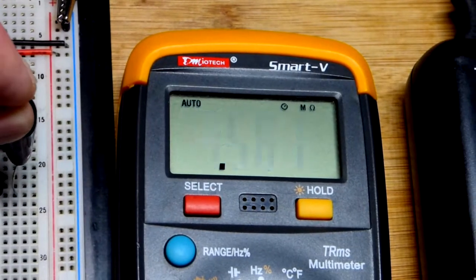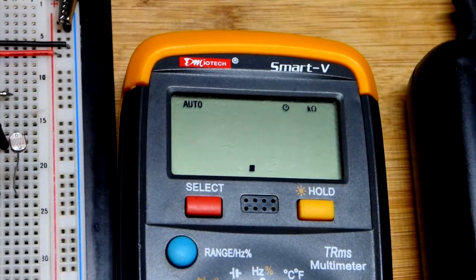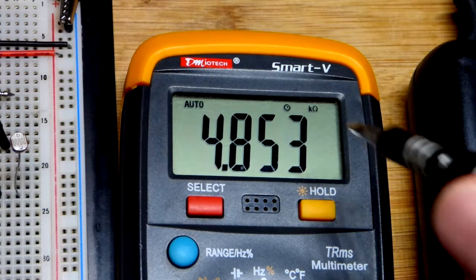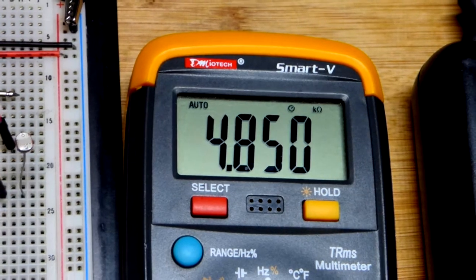There you can see mega right there and I can cover it even more to go up, but when I remove it now you can see we're back to the kilo ohms, thousands of ohms right there.